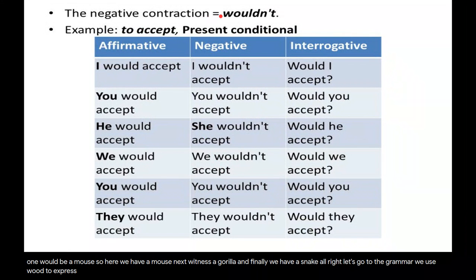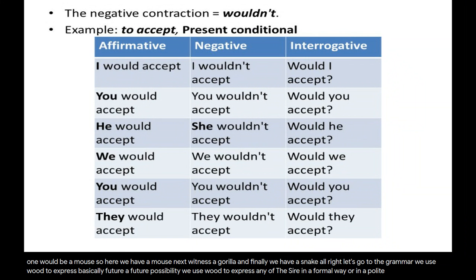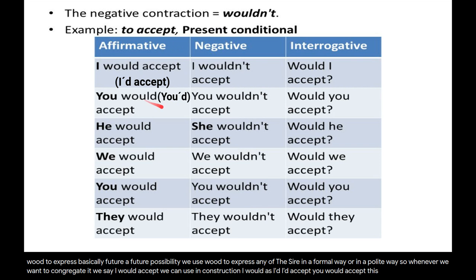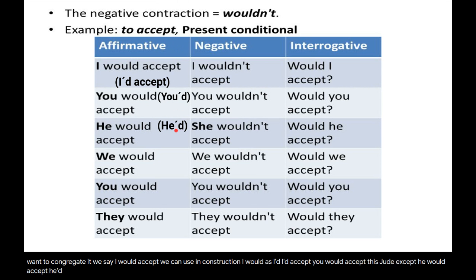Now let's go to the grammar. We use 'would' to express a future possibility and also to express any desire in a formal or polite way. To conjugate it: I would — contraction is I'd. For example, 'I'd accept,' 'you'd accept,' 'he'd accept.'